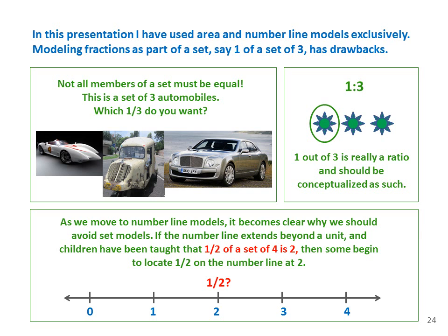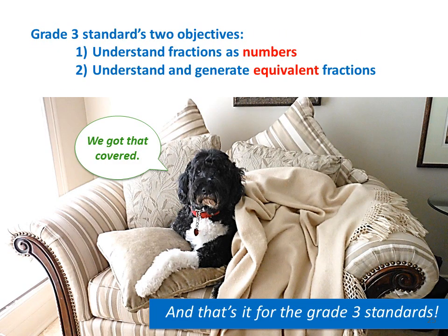Note that in this presentation we've used area and number line models exclusively. Modeling fractions as part of a set — say, one of a set of three — has drawbacks. First, not all members of a set must be equal; the set of all dogs contains a Chihuahua and a Great Pyrenees. Secondly, one out of three is really a ratio, and it should be conceptualized as such — the standards introduce ratios in grade 6. As we move to number line models, it becomes clear why we should avoid set models: if the number line extends beyond a unit and children have been taught that 1 half of a set of 4 is 2, some may begin to confuse 1 half with the number 2.